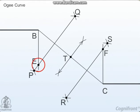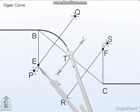With points E and F as the center points and radii equal to EB and FC, draw arcs BT and CT.